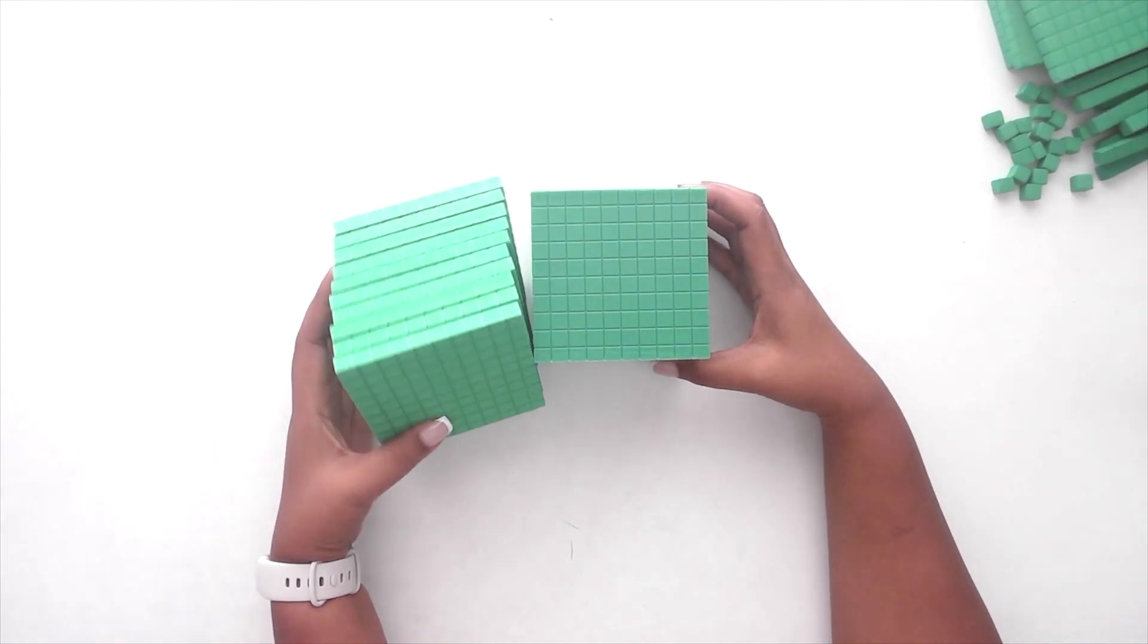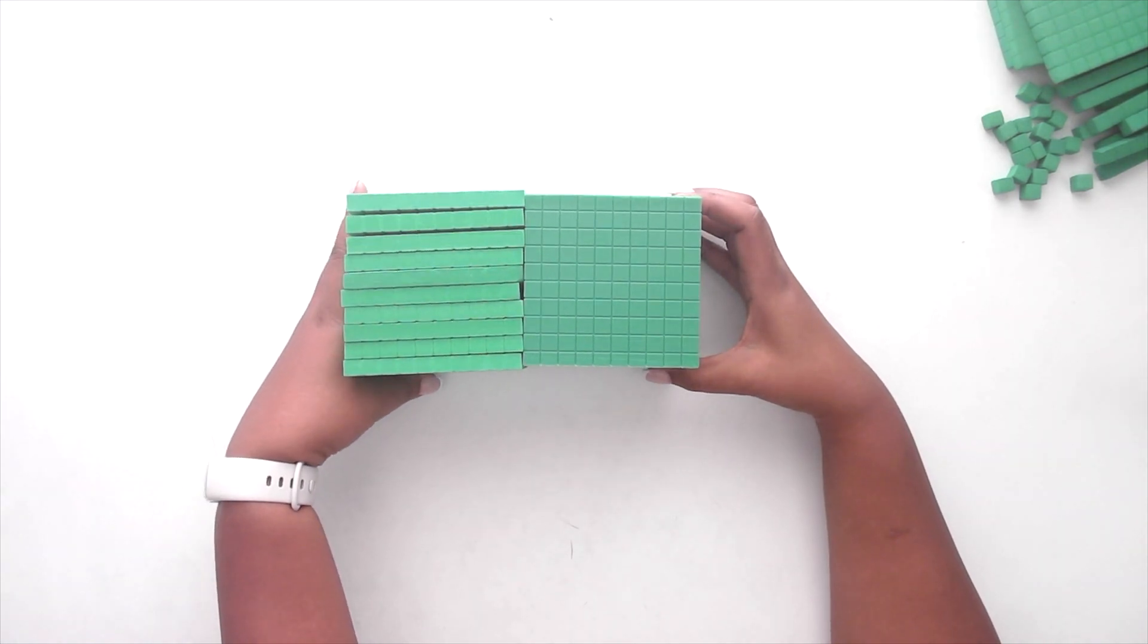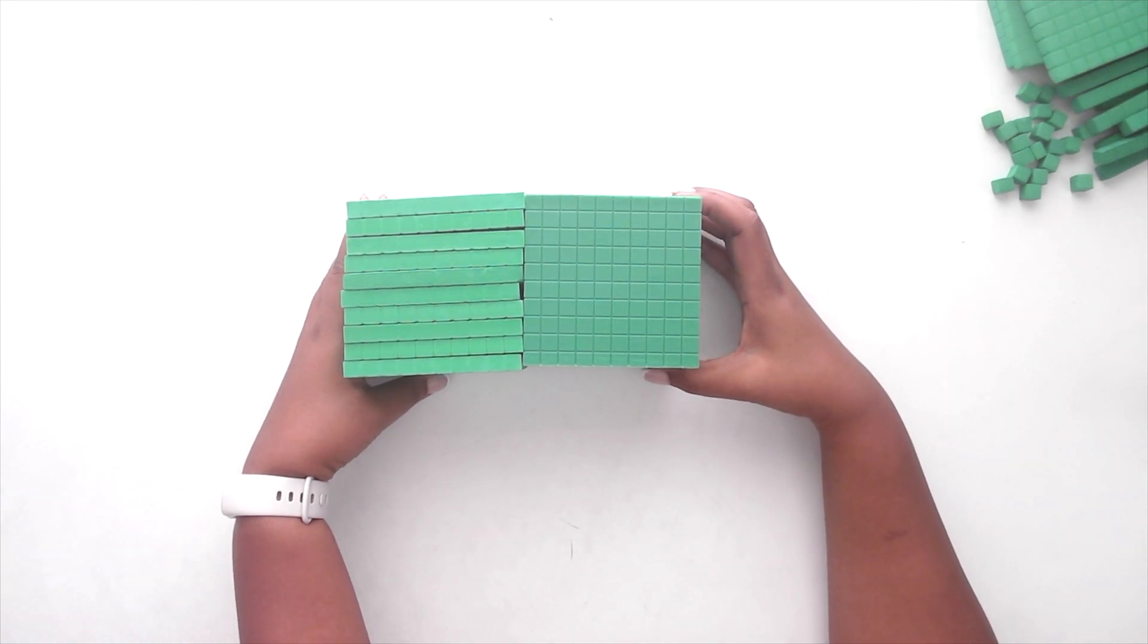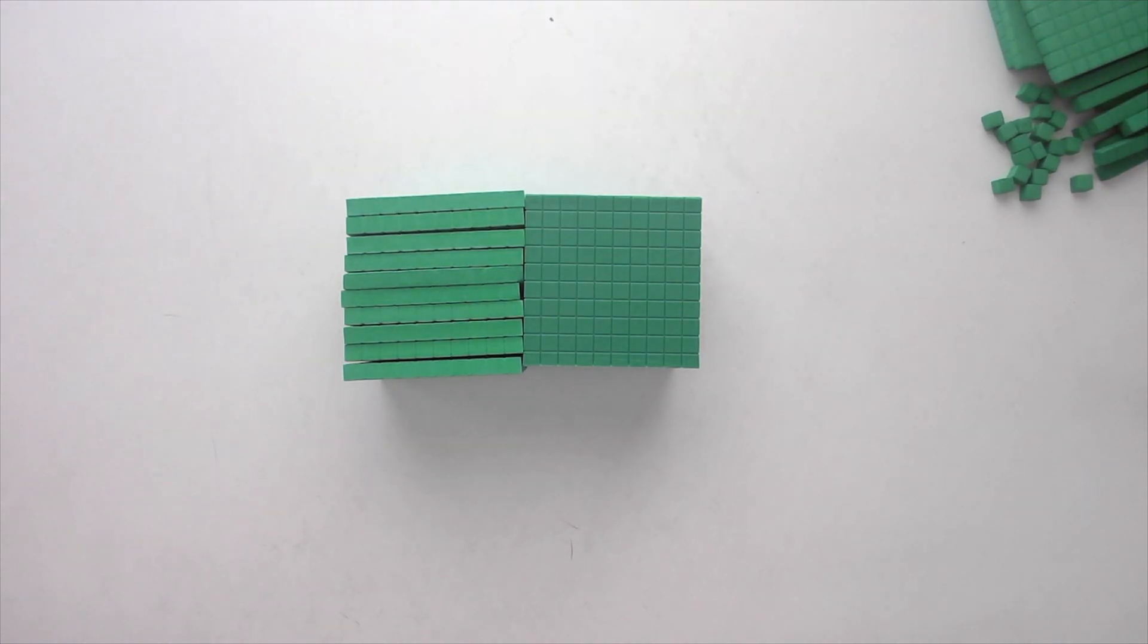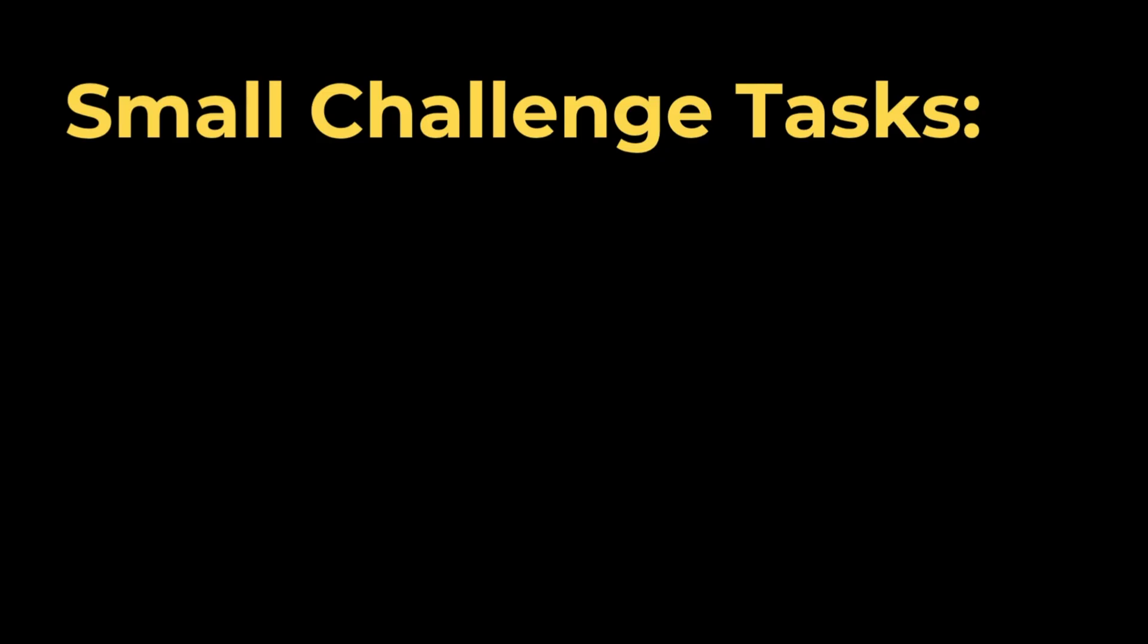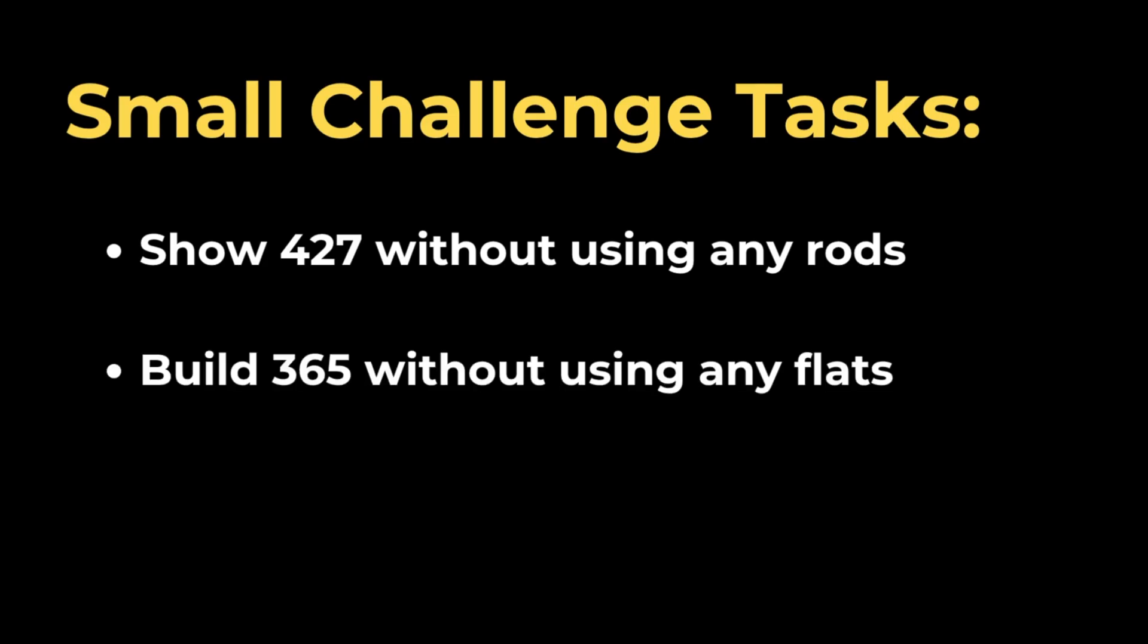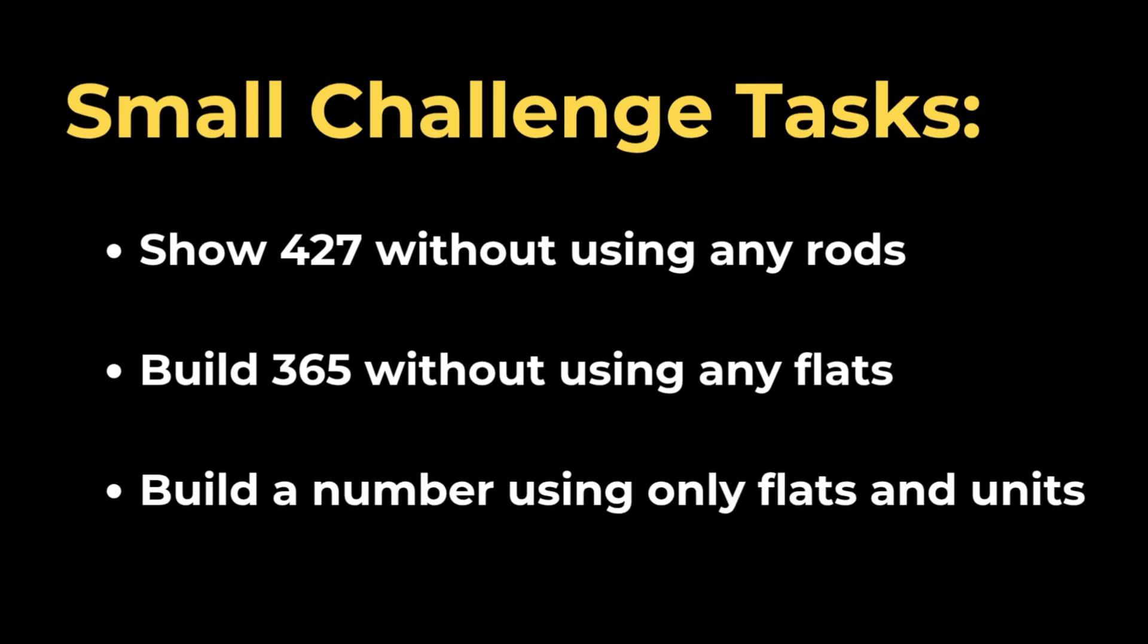This hands-on regrouping builds understanding of how place value changes when adding, subtracting, or reorganizing numbers. You can keep building numbers engaging with small challenges such as: show 427 without using any rods, build 365 without using any flats, or build a number using only flats and units.